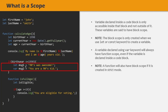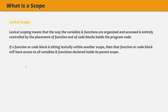Those are the three types of scopes we have in JavaScript. Now in JavaScript we have something called lexical scoping, so let's understand what that is. Lexical scoping means that the way variables are organized and accessed is entirely controlled by the placement of the function and of the block in the program code. If a function or code block is sitting lexically within another scope, it will have access to all the variables and functions declared inside its parent scope.